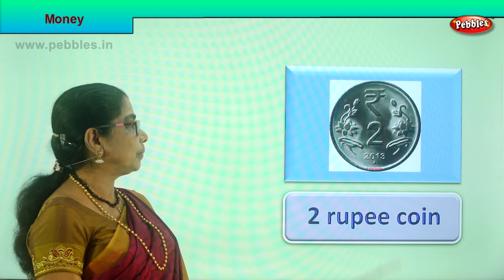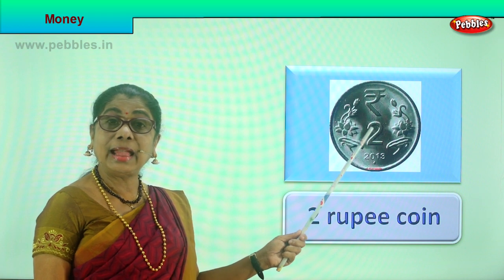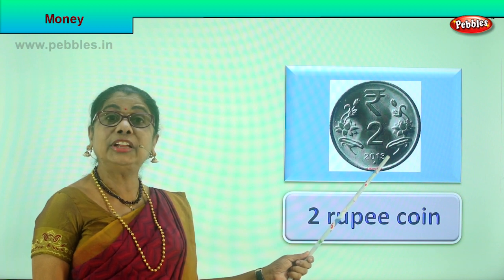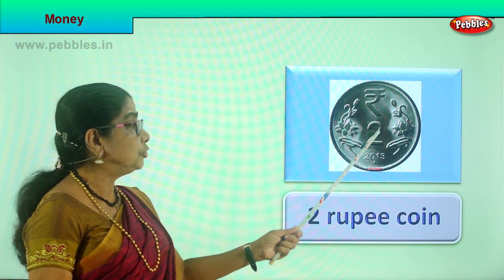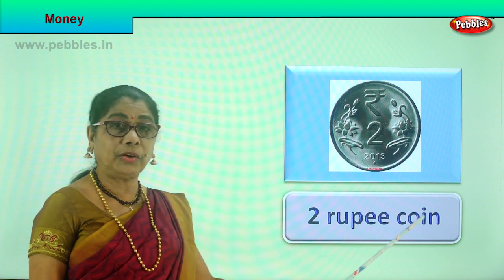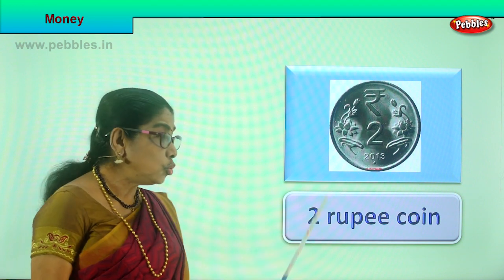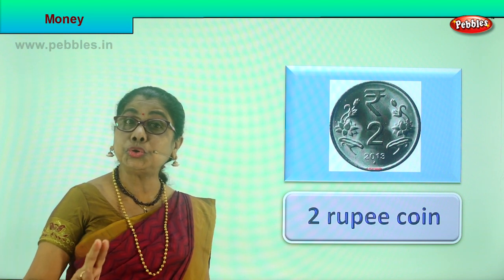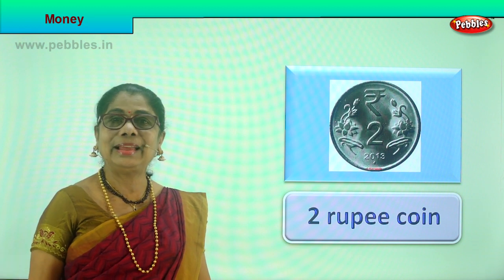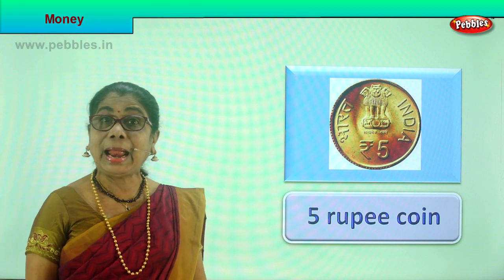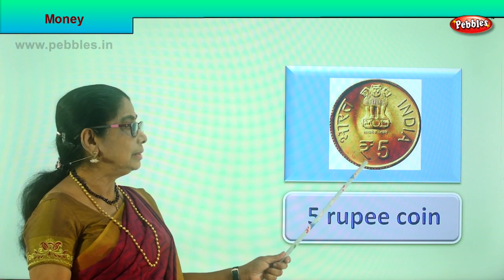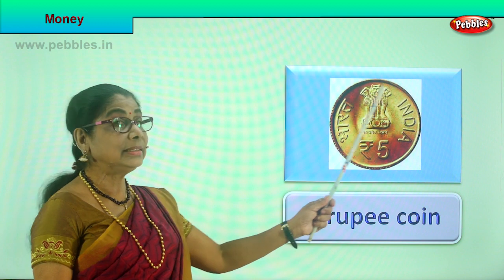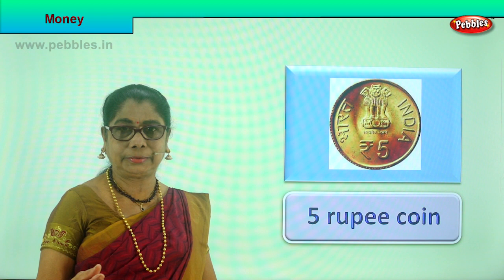What is the next denomination after the one rupee coin? It is a coin with value two written on it. On one side you have the number two written, and it says 'rupees two'. This is a two rupee coin. Next, let's look at the next higher denomination in coins. This one is very prominent because it is golden color. It is written 'rupees five' - this is the five rupee coin, and it is thick and heavy.